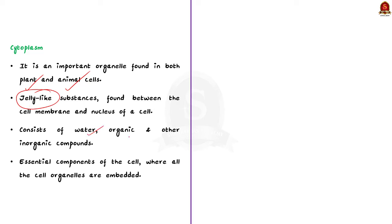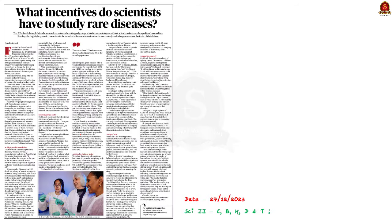The cytoplasm consists of water, organic substances and inorganic compounds. So these are the important organelles of the cell. With this let us conclude the discussion and move to the next topic.